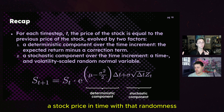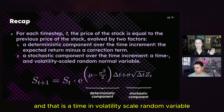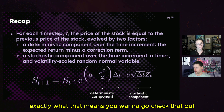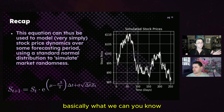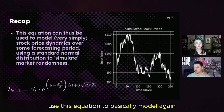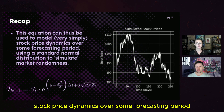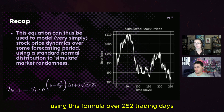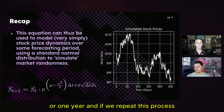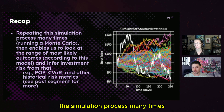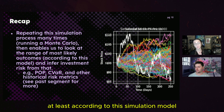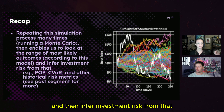Then we have a stochastic component — this is how we simulate randomness and propagate a stock price in time with that randomness accounted for. It's a time- and volatility-scaled random variable. Basically, we can use this equation to model stock price dynamics over some forecasting period using a standard normal distribution to simulate market randomness. Running this simulation many times gives us a Monte Carlo, allowing us to look at the range of most likely outcomes and infer investment risk.